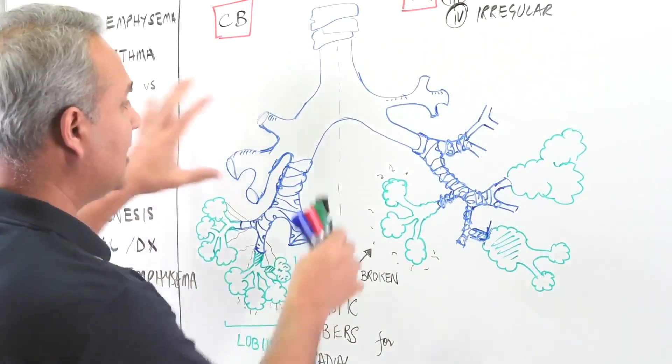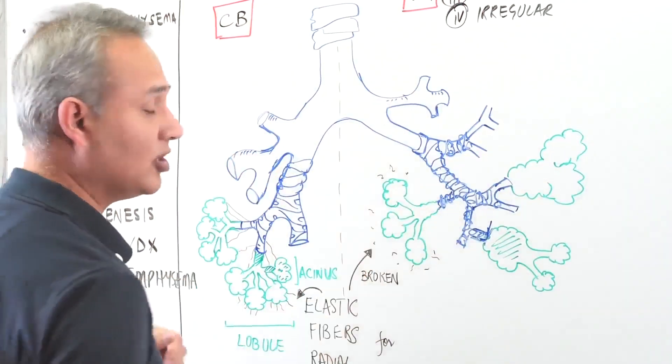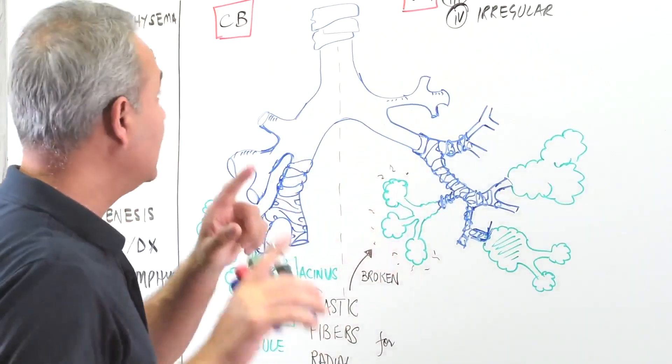The difference between asthma and chronic obstructive pulmonary disease - these two diseases together are called COPD - is that asthma is reversible while COPD is not reversible.